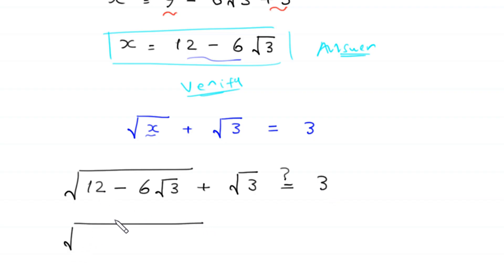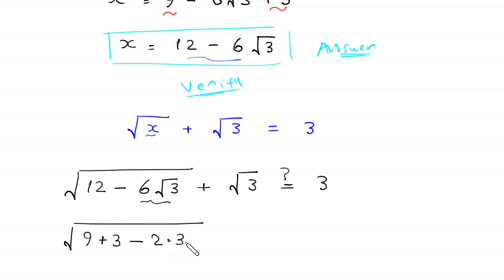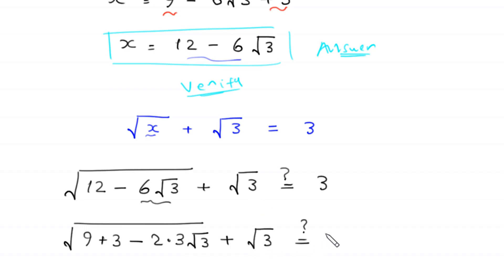We rewrite 12 as 9 plus 3, and 6 times root 3 as 2 times 3 times root 3. So inside the square root we have 9 plus 3 minus 2 times 3 times root 3, plus root 3 — is it equal to 3?